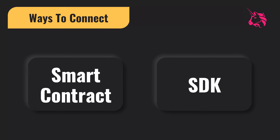We can build our front-end application using Next.js, React.js, or TypeScript. Uniswap provides two ways to connect and interact with the protocol: first, directly from the smart contract, and second, using the SDK — which is a JavaScript library. We're going to do both. We'll start with the smart contract and test the entire logic of our Uniswap exchange that way.